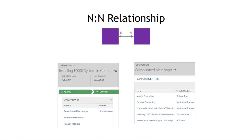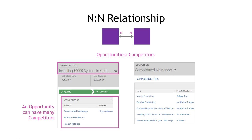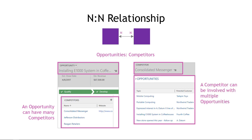Our third and final type of relationship is N-to-N or many-to-many — something like opportunities to competitors, taken from the Dynamics 365 interface. An opportunity can have many competitors, and a competitor can be involved with multiple opportunities. So we have a many on both sides of the relationship, and hence a sub-grid on both sides as well.